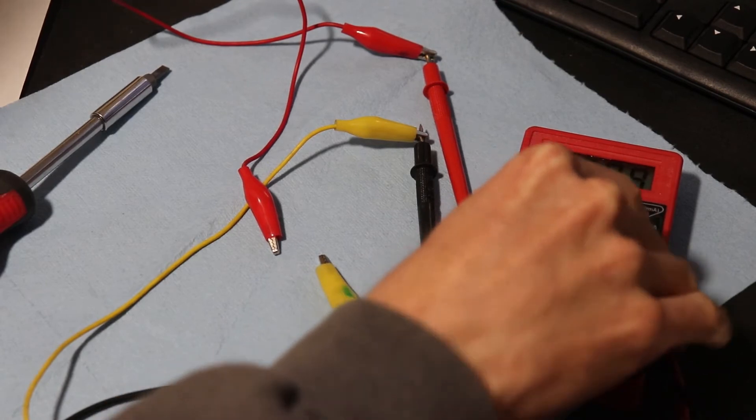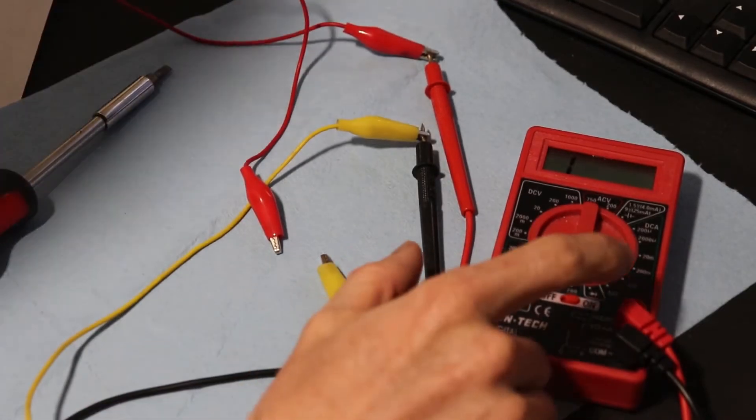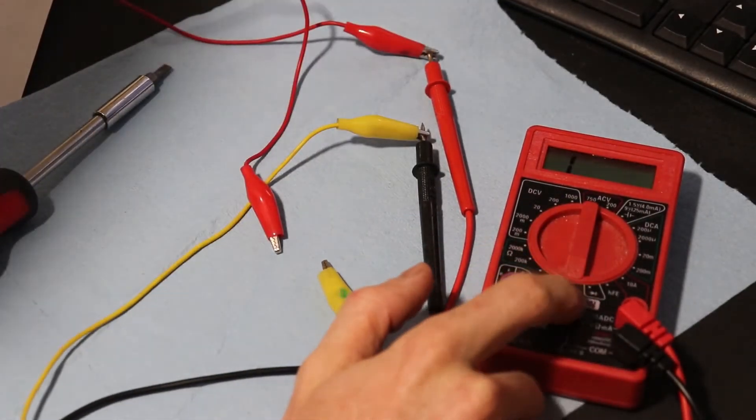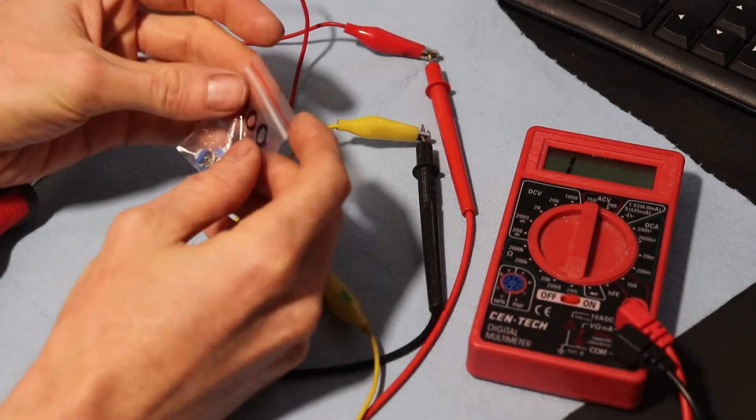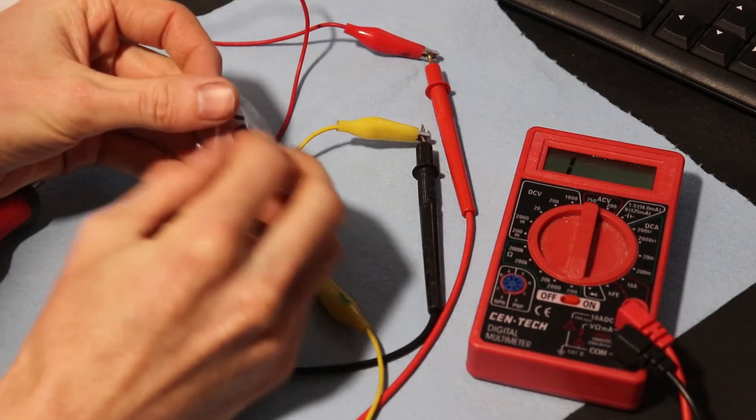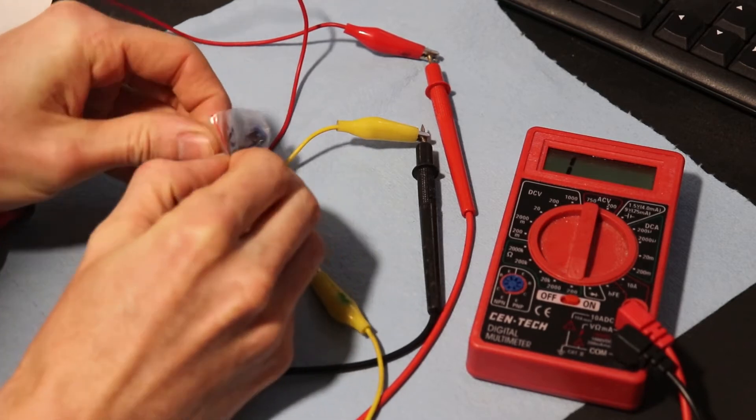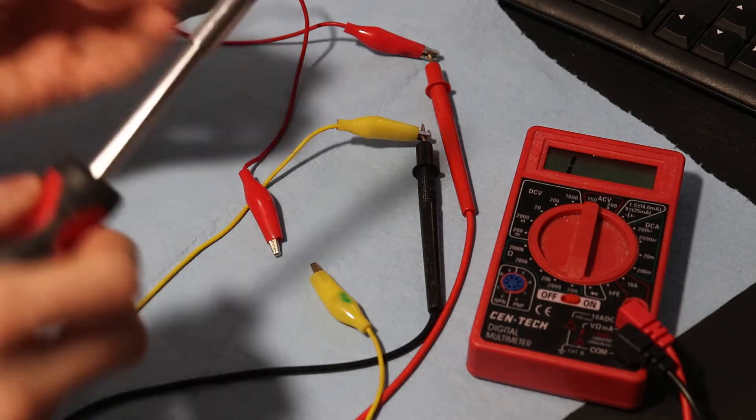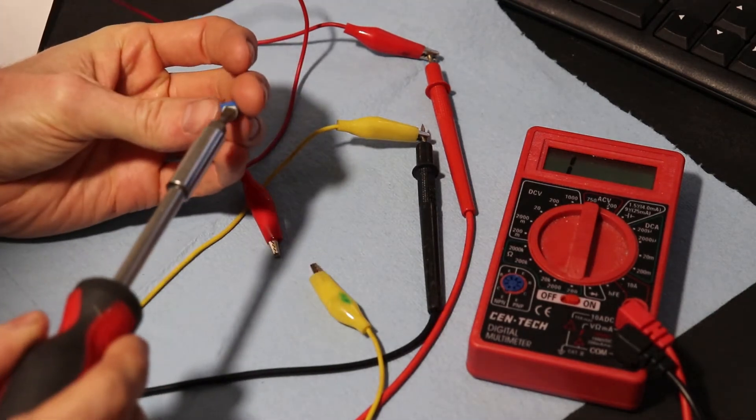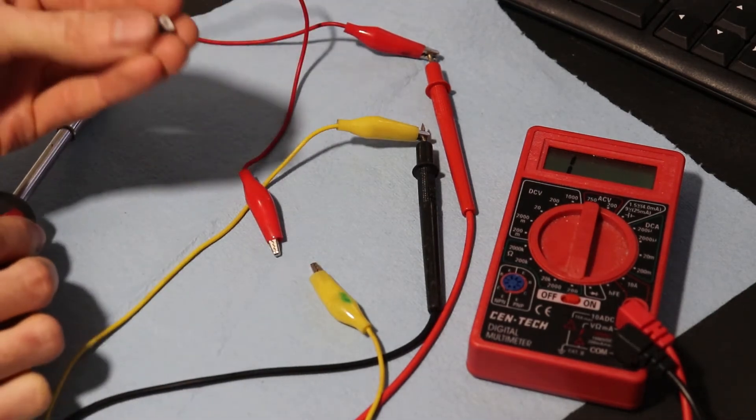Alright, so just to demonstrate here, I got my multimeter set to the 200 ohm setting and I'm using some potentiometers which are just resistors that are variable. So you turn this adjustment on the top and I'll show you.